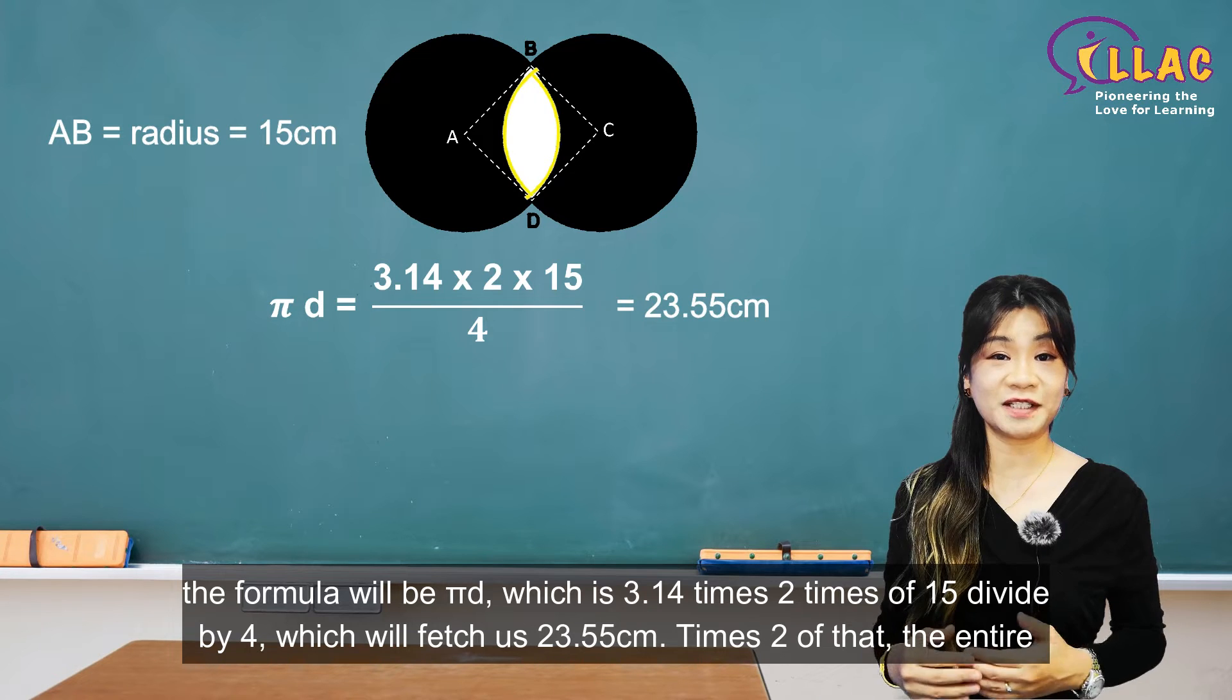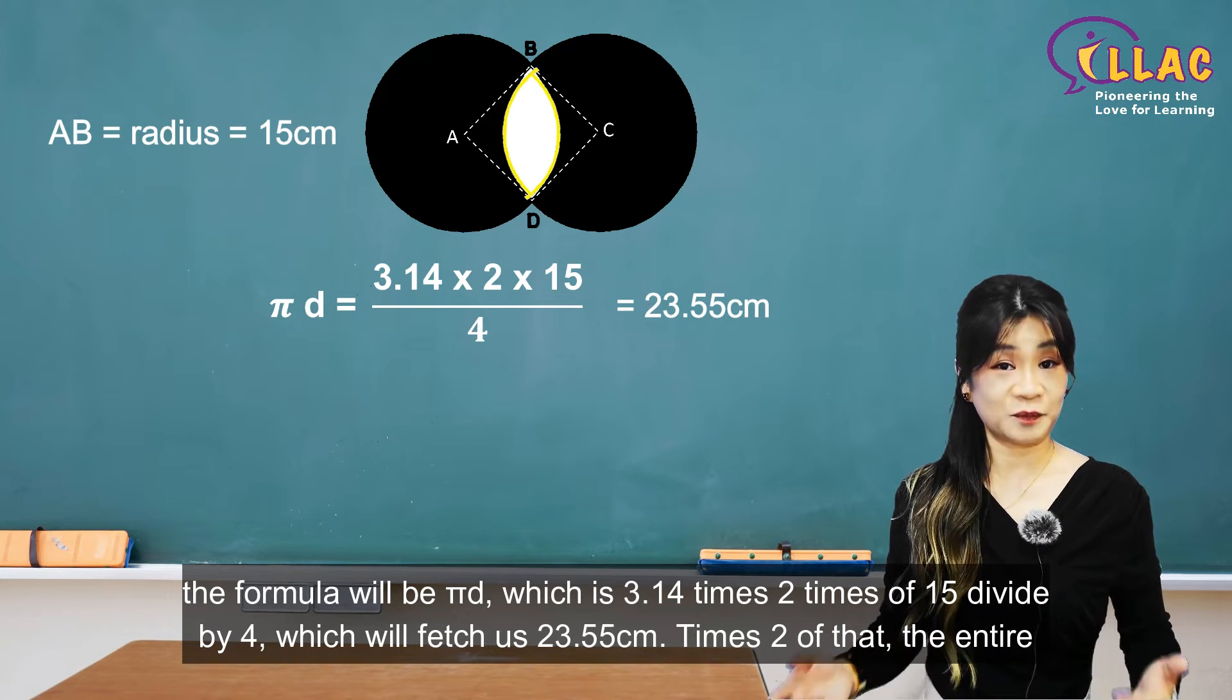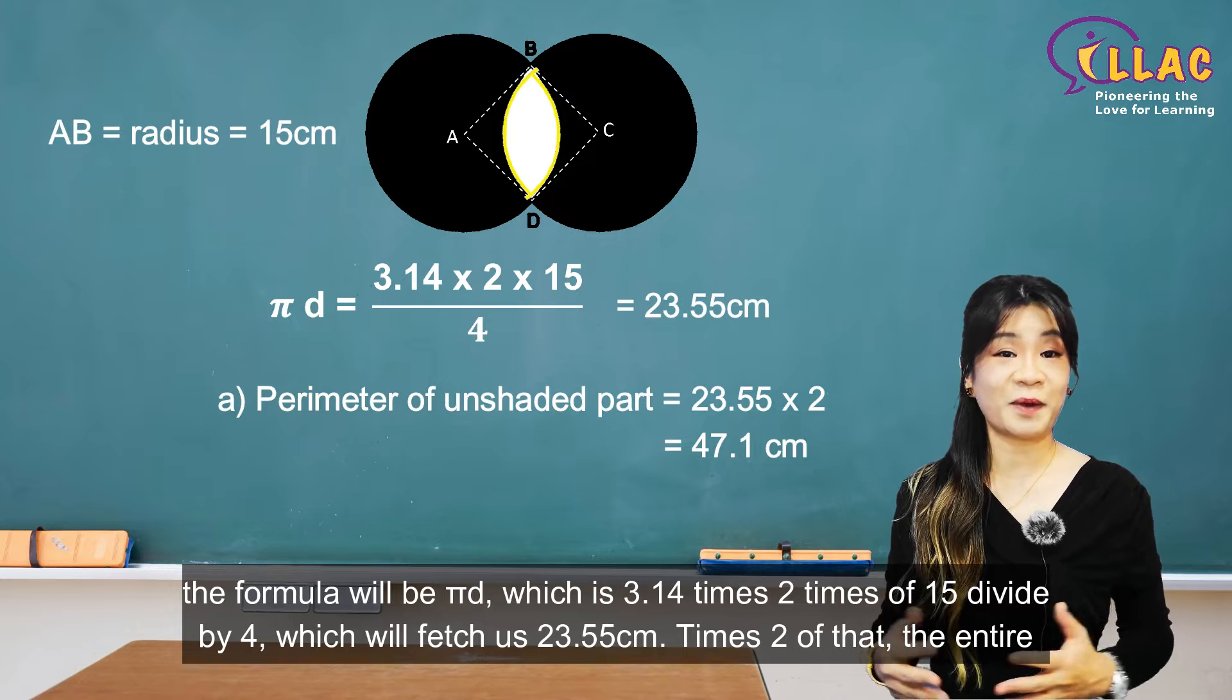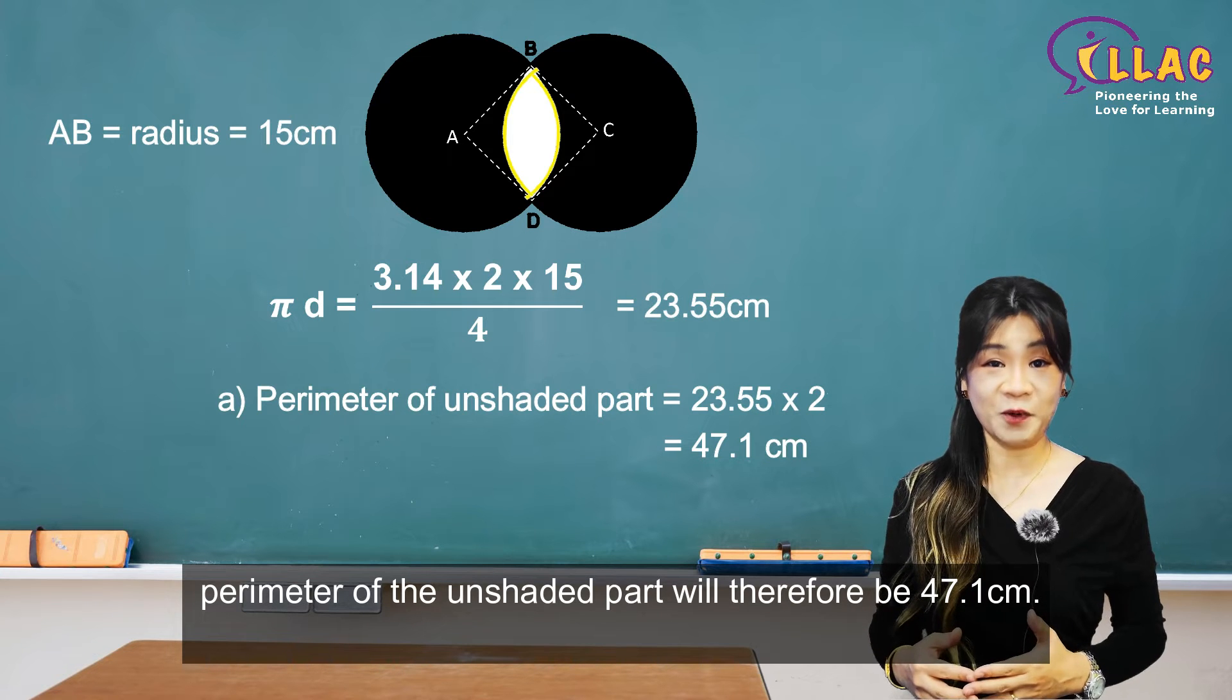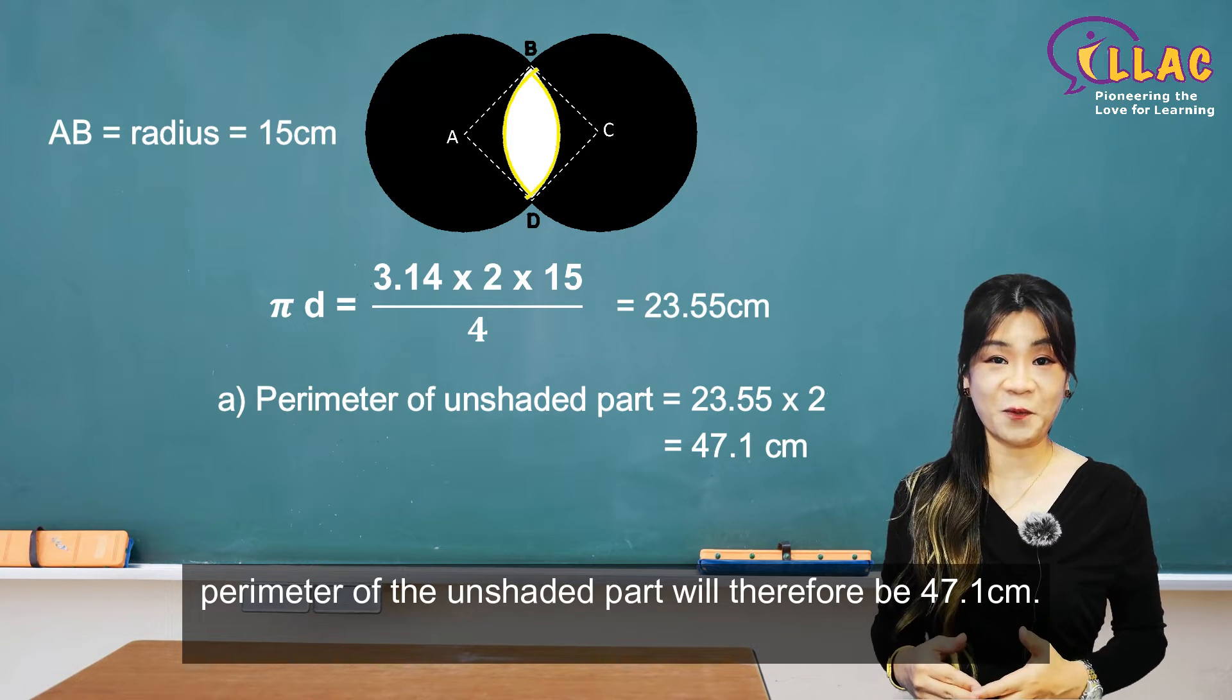This will fetch us 23.55cm. Times 2 of that, the entire perimeter of the unshaded part will therefore be 47.1cm.